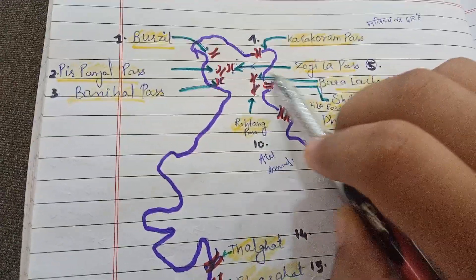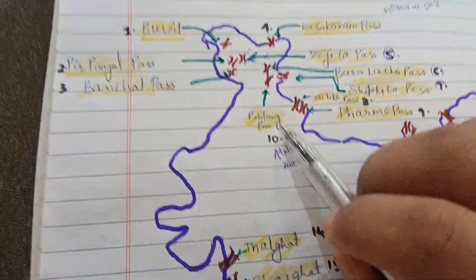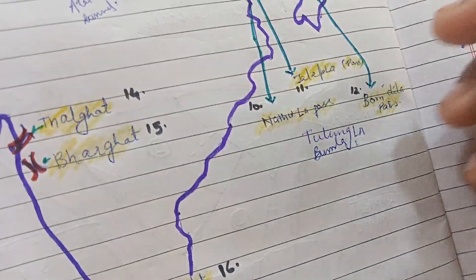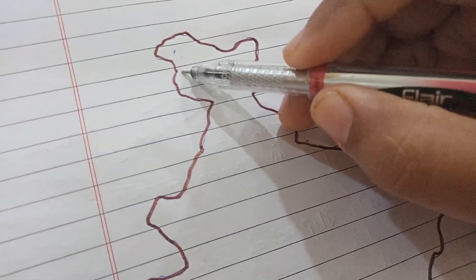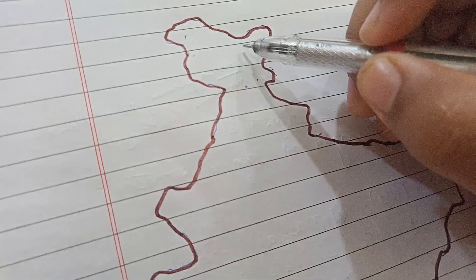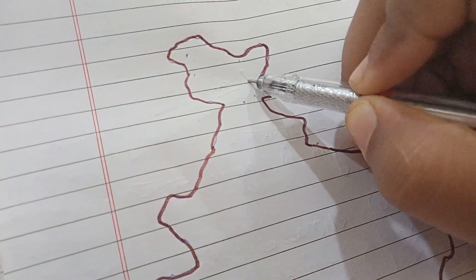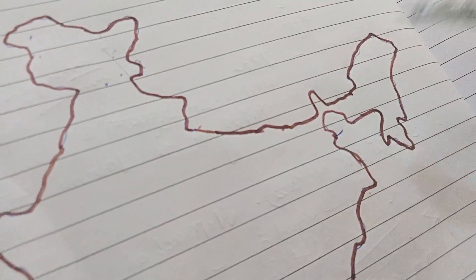The passes we have studied are: Karakoram Pass, Peer Panjal Pass, Zozila Pass, Benihal Pass, Baralajal Pass, Shibkila Pass, Nitila Pass, Rohtang Pass, Dharma Pass, Tulungla Pass, Burzila Pass, Thar Ghat, Bar Ghat, Senkota, and in the eastern part — Zalepala, Nathula, and Bumdila.